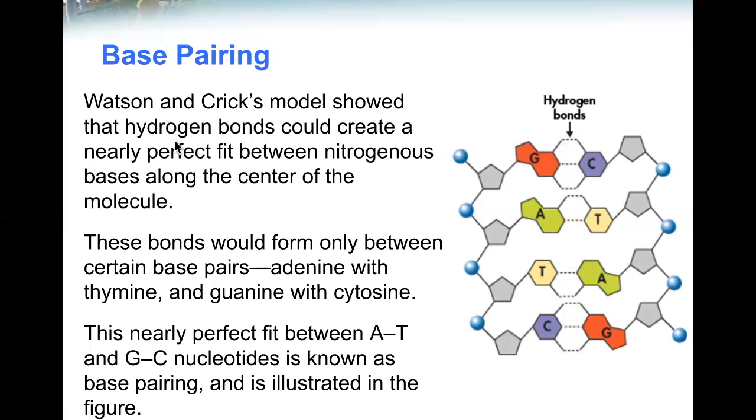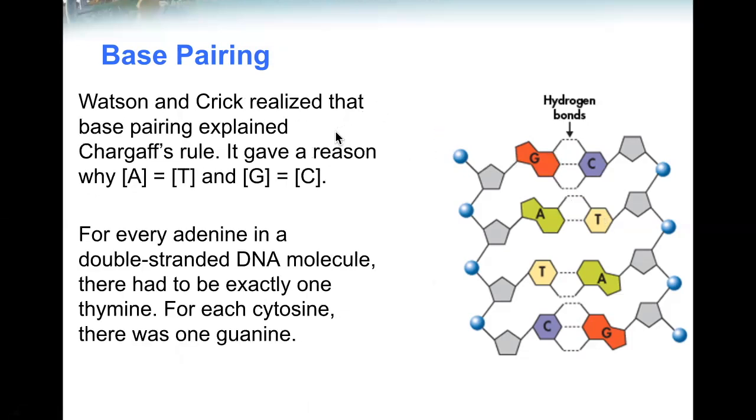Watson and Crick's model showed that hydrogen bonds could create a nearly perfect fit between nitrogenous bases along the center of the molecule. These bases would form only between certain base pairs: adenine with thymine and guanine with cytosine. This nearly perfect fit between AT and GC nucleotides is known as base pairing and is illustrated in the figure. Watson and Crick realized that the base pairing explained Chargaff's rule. It gave a reason why A equals T and G equals C. For every adenine in a double-stranded DNA molecule, there had to be exactly one thymine. For every cytosine, there was one guanine.